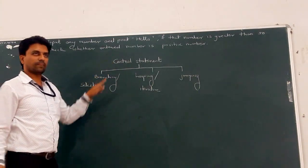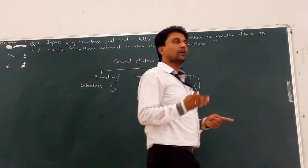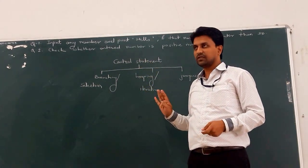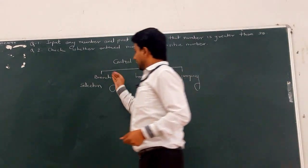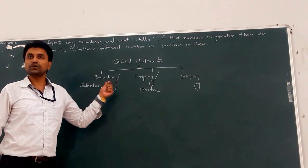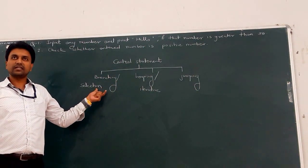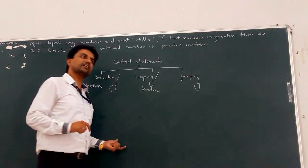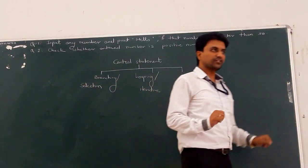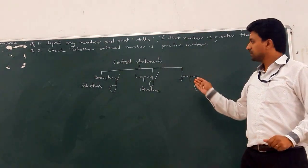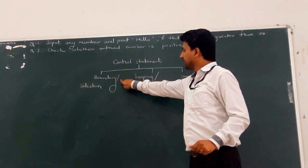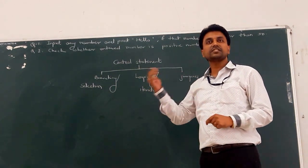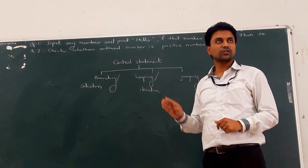Control statements means we can use control on the statements — that type of statements are called control statements. Previously we only saw statements with no control on them. If a program has 10 statements, then all 10 statements get executed. Now we will make some control on the statement — whether that statement is executed or not, based on a condition.